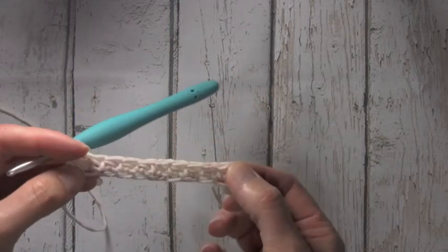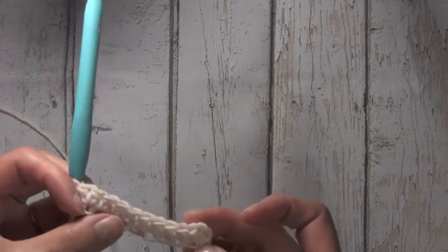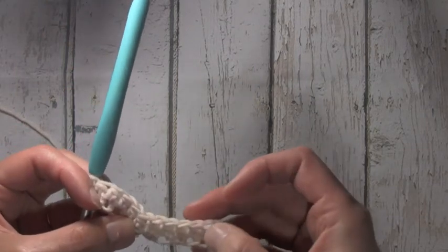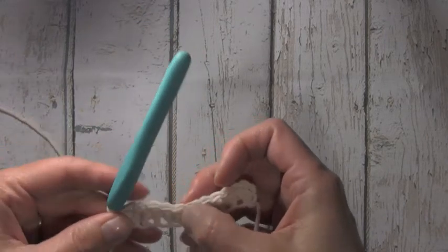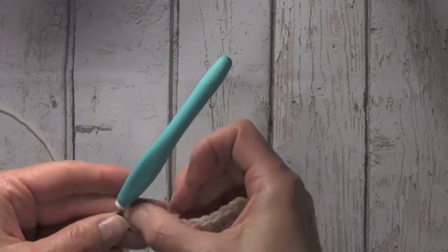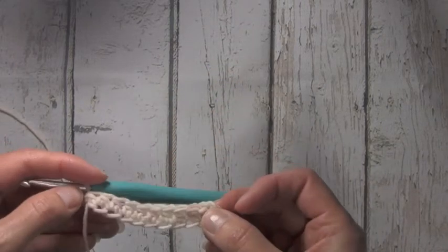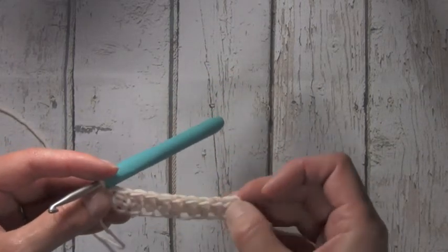You see here, I have several. And to count those, one, two, three, four, five, six, seven, eight, nine, and ten. So I've completed 10 foundation half double crochets.